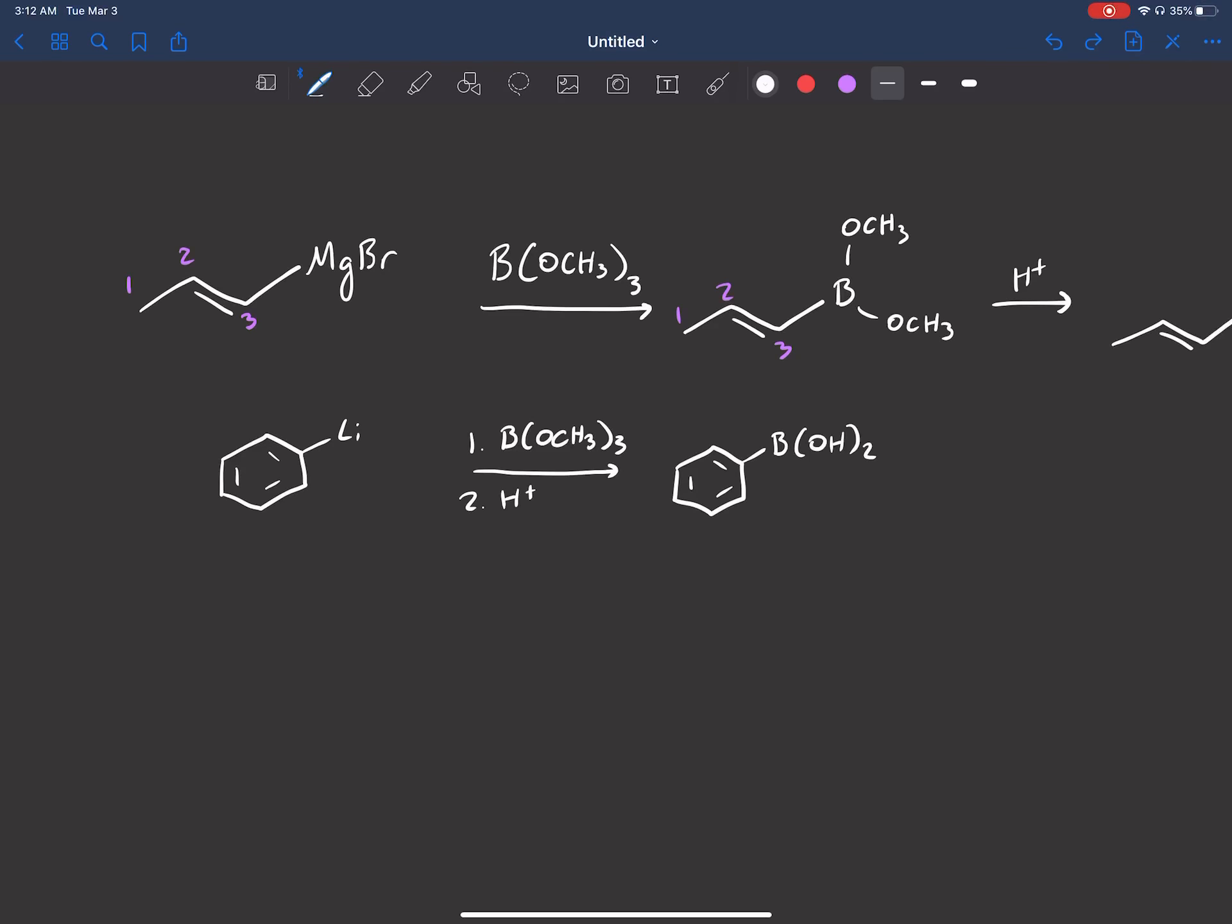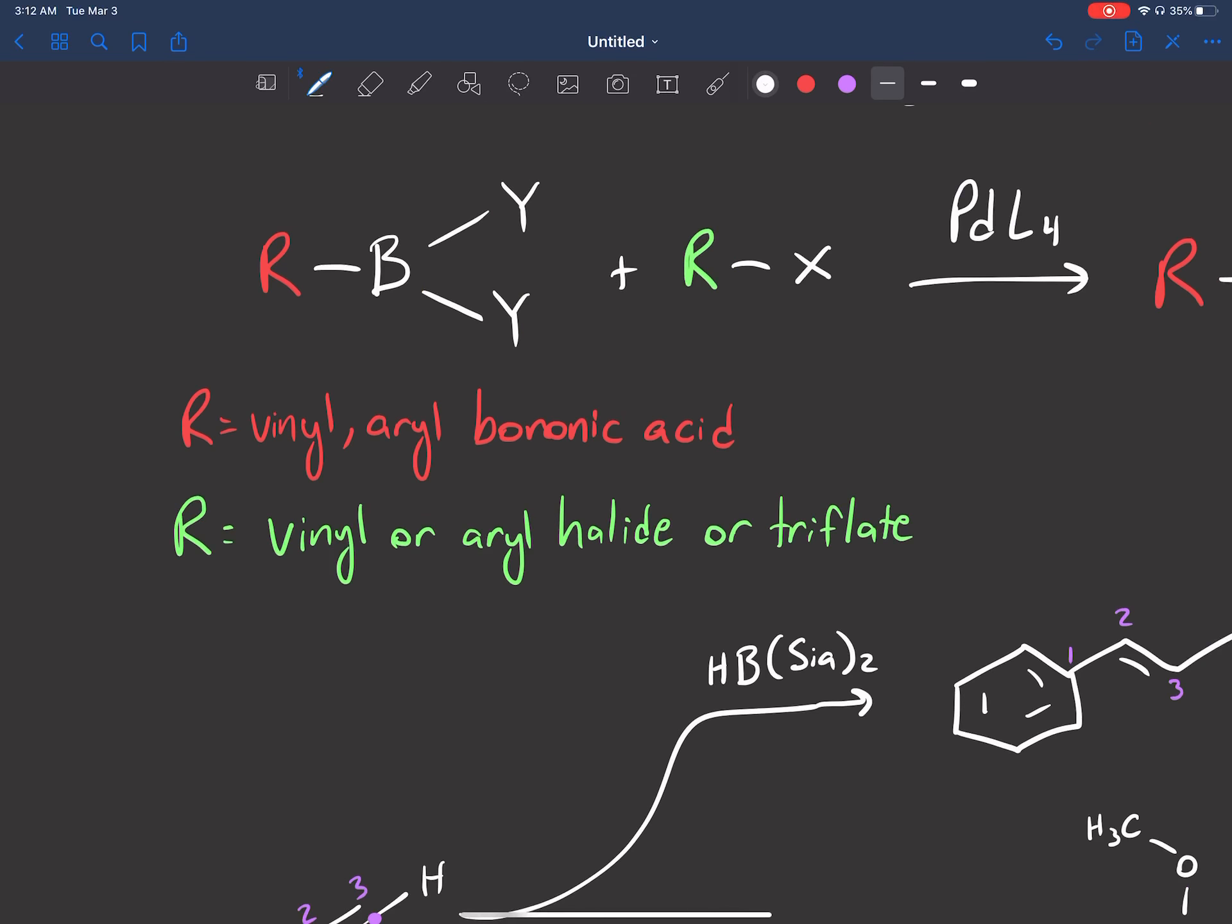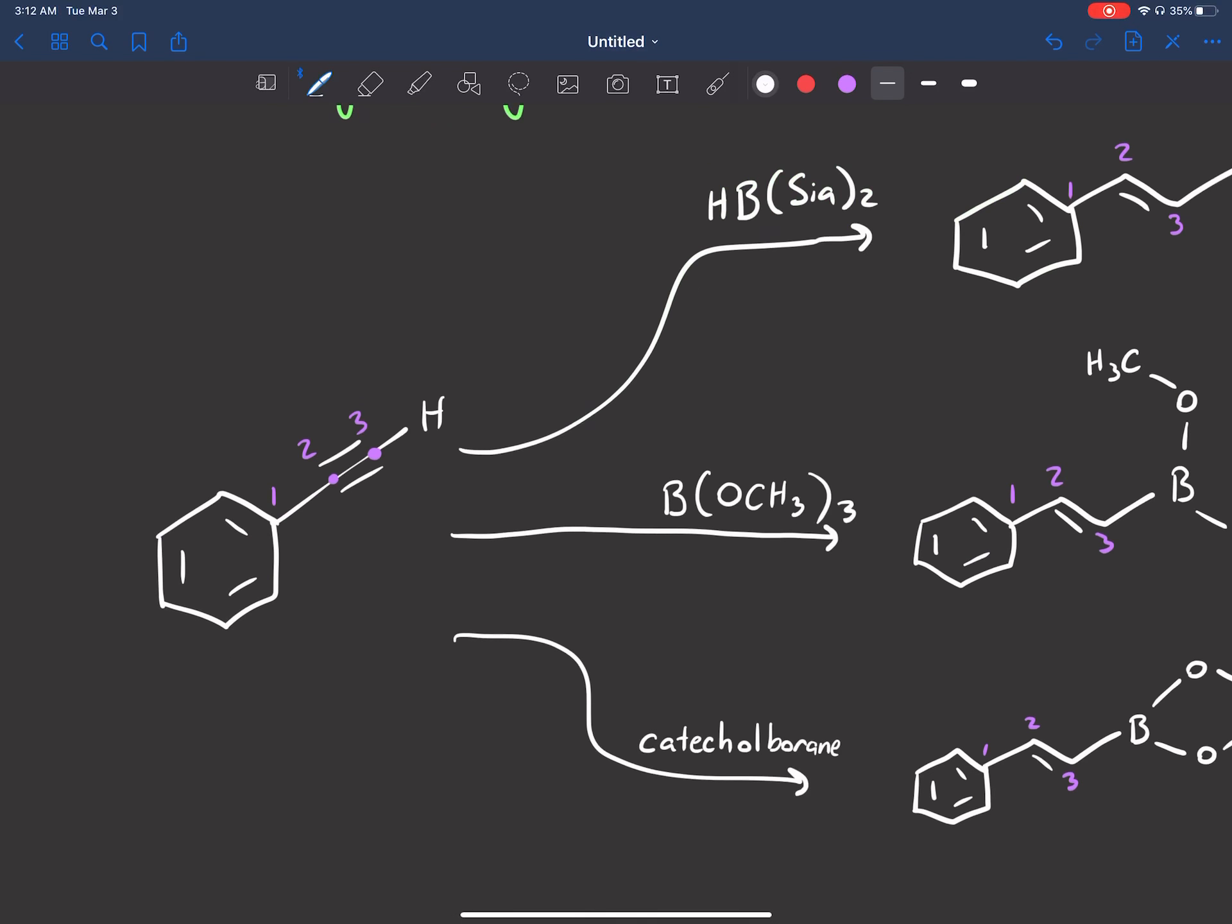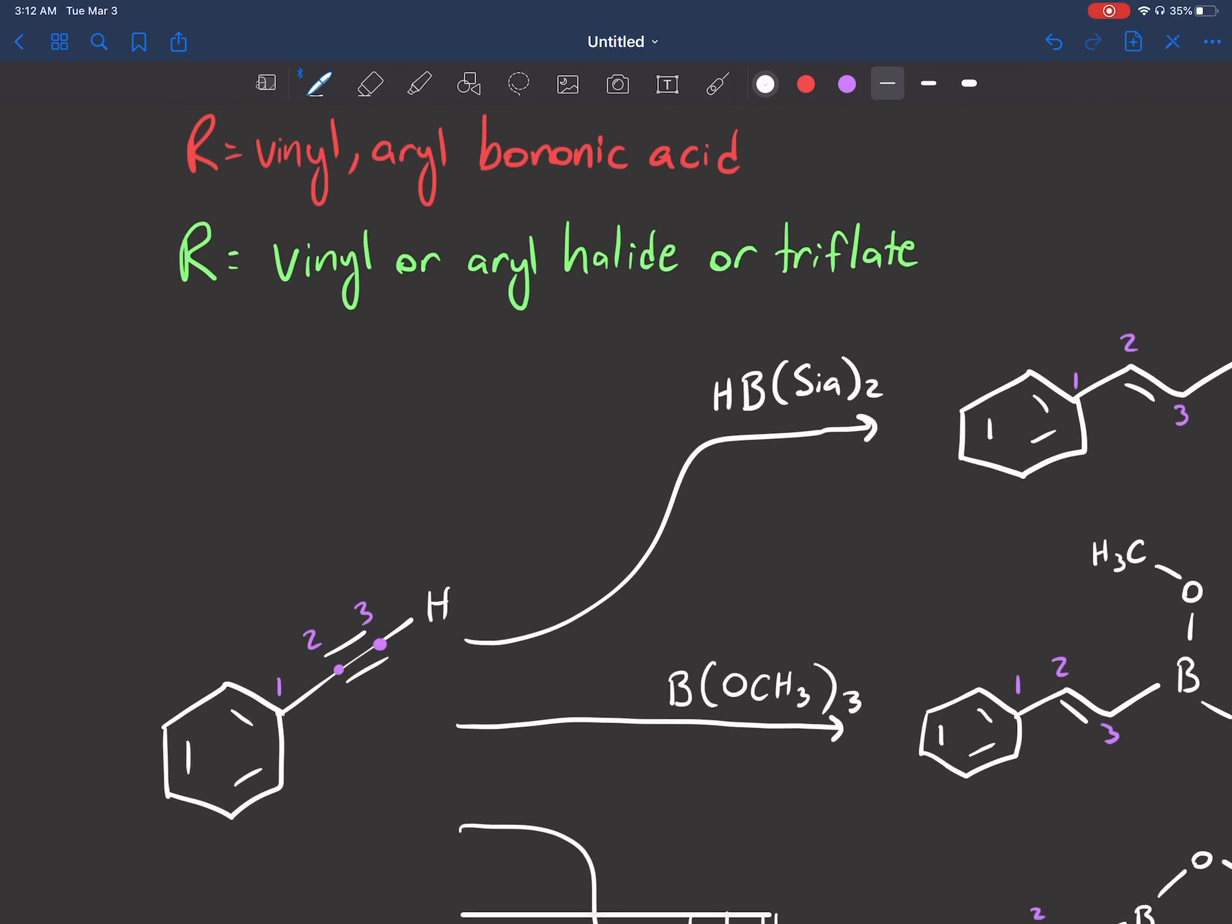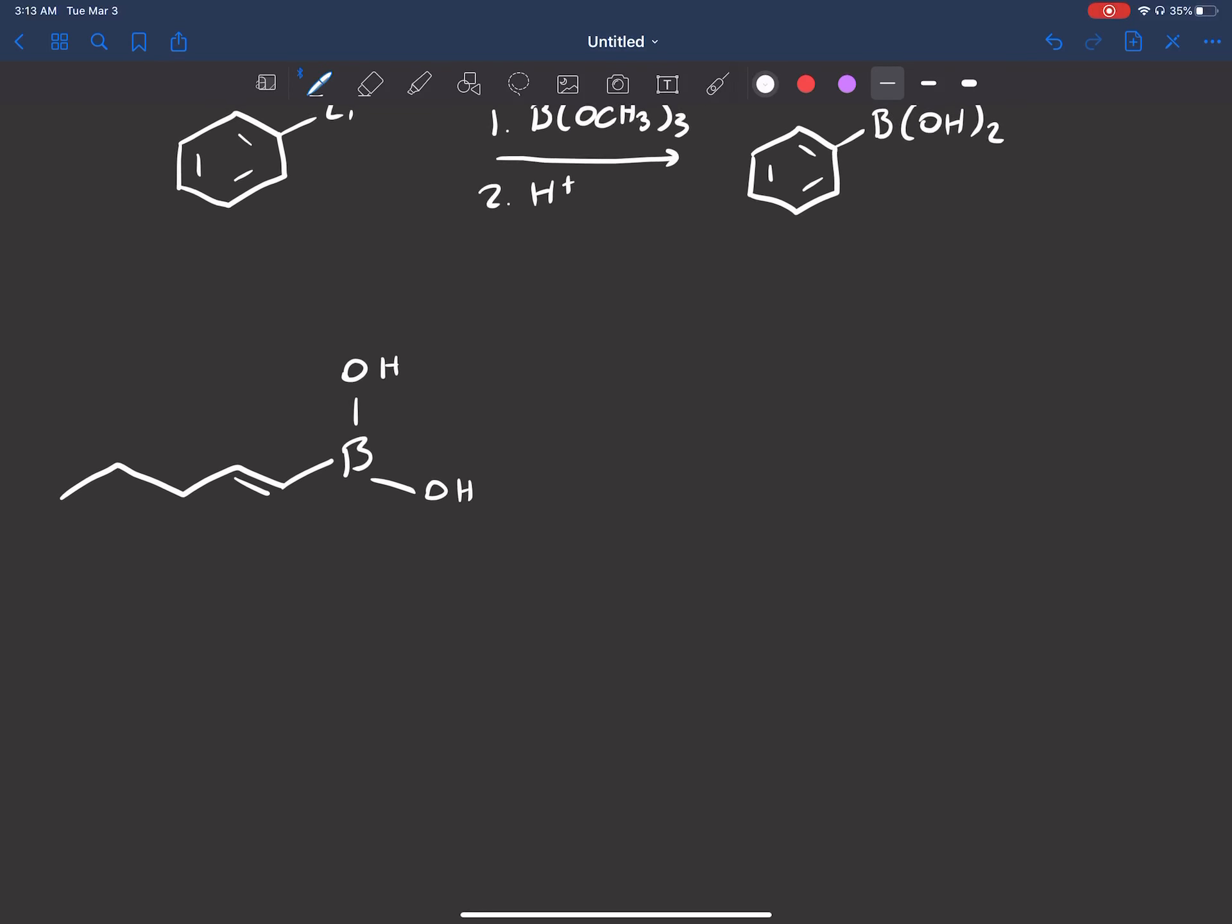Now that we have that, let's try an example of the Suzuki reaction. I'm going to skip straight ahead to the actual boronic acid compound, so we don't have to go through making it again. We've just seen that. So here's our boronic acid compound. Now the R group bound to the boron is a vinyl-aryl boronic acid. In this case, it's vinyl.